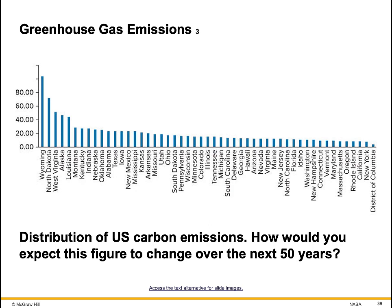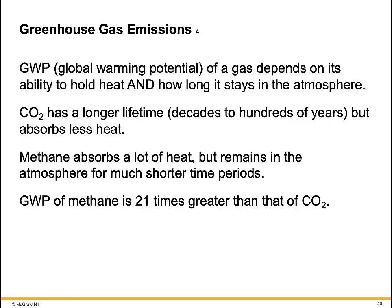The distribution of U.S. carbon emissions — how would you expect this figure to change over the next 50 years? The global warming potential of a gas depends on its ability to hold heat and how long it stays in the atmosphere. Carbon dioxide has a longer lifetime of decades to hundreds of years but absorbs less heat. Methane absorbs a lot of heat but remains in the atmosphere for much shorter time periods. The GWP of methane is 21 times greater than that of carbon dioxide.